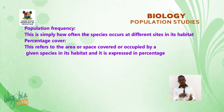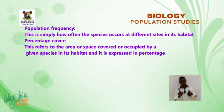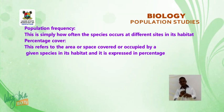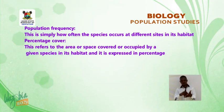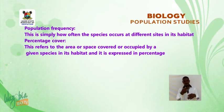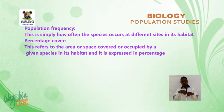Population Frequency is simply how often the species occur at different sites in its habitat. Percentage Cover refers to the area or space covered or occupied by a given species in its habitat, and it is expressed as a percentage.